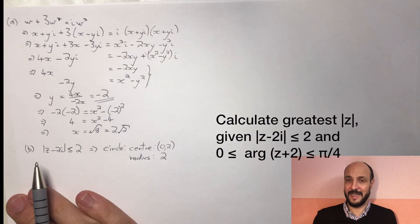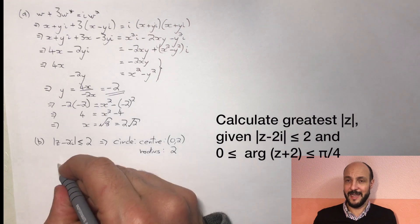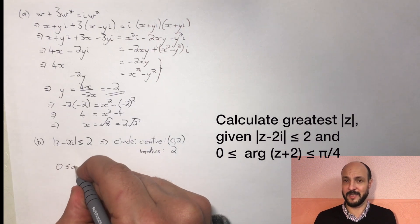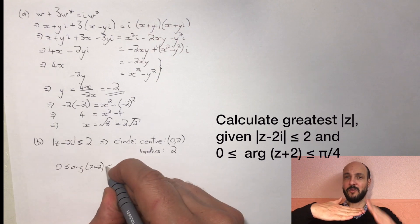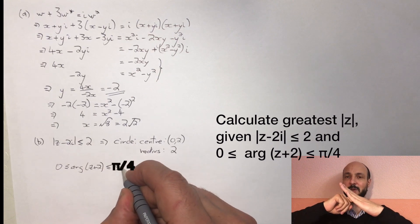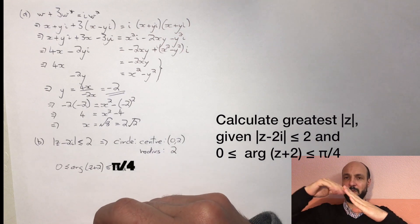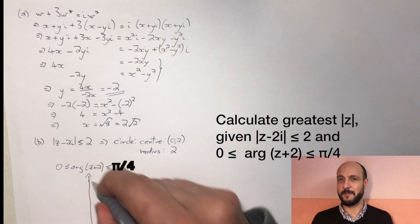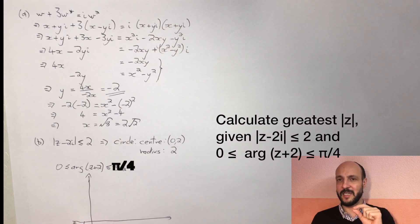Now the second part, 0 is less than or equal to the argument of Z plus 2, which is less than or equal to π over 4. Now let's just say we're asking about the argument of Z. If it's between zero and π over 4, that's between 0 degrees and 45 degrees, so we would have a line drawn from our origin going up at 45 degrees and we'd shade below it.